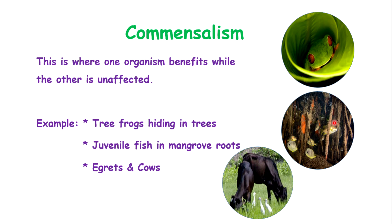Another example is juvenile fish within the roots of mangroves. The juvenile fish use mangrove roots as a safe haven, because larger fish cannot pass through to capture them. They stay there until they are big enough to venture into the wider ocean. The mangrove is unaffected — the fish are not disturbing or taking anything from the roots. It acts like a nursery ground for the fish.